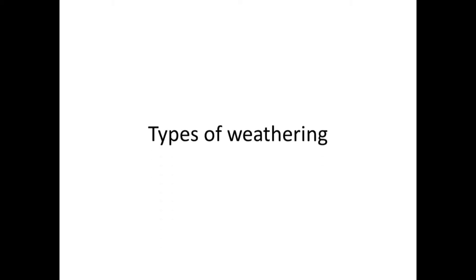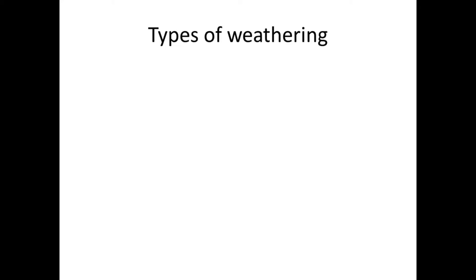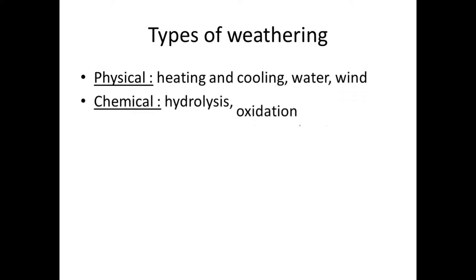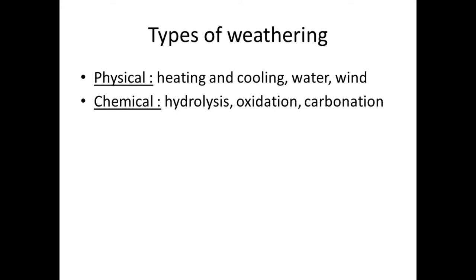Weathering is the breakdown of parent rock material into smaller ones. The types of weathering that occur in nature are: physical weathering, due to heating and cooling, water, wind, etc.; and chemical weathering, due to hydrolysis, oxidation, and carbonation reactions that occur in the environment.